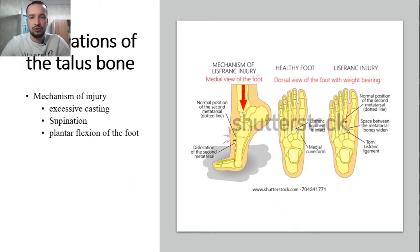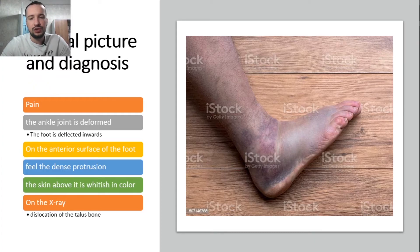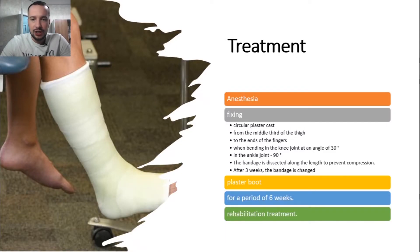Dislocation of the talus bone: the mechanism of injury is indirect — excessive adduction, supination, and plantar flexion of the foot. Pain at the injury site is present, the ankle joint is deformed, and the foot is deflected inwards. On the dorsal surface of the foot a dense protrusion is felt, and the skin above it is whitish in color due to ischemia.